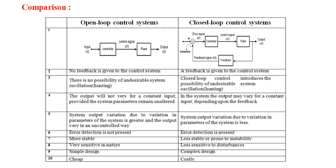Third point: in open loop control systems there is no possibility of undesirable system oscillations or hunting. In closed loop control systems, the feedback introduces the possibility of undesirable system oscillations and hunting. Fourth point: in open loop, the output will not vary for a constant input provided the system parameters remain unaltered. In closed loop, the output may vary for a constant input depending upon the feedback element, which senses the output and feeds it back to the input side.